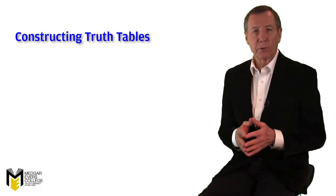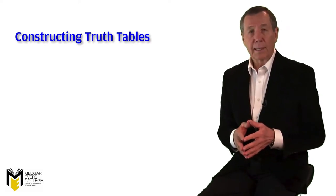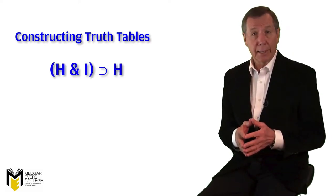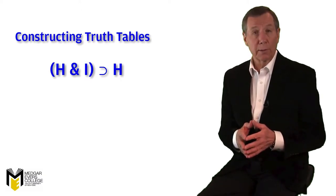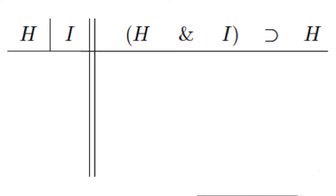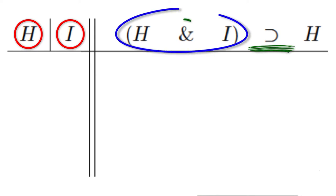Let's resume our study of truth tables with an example. Take the sentence, if H and I, then H. Let's construct a truth table for it, starting with the header row. This sentence has two variables, H and I, connected conditionally with the antecedent condition containing the conjunction of H and I.